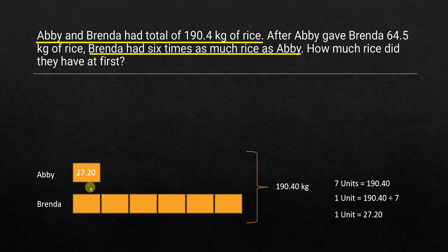So here, Abhi's box is 27.20, and similarly all of the units will also be 27.20. Now the question is: after Abhi gave Brenda 64.5 kg of rice, the relationship changed. How much rice did they have at first?